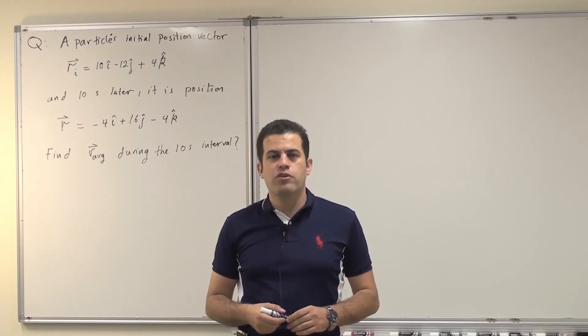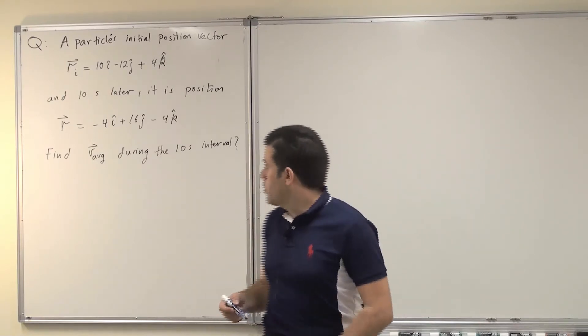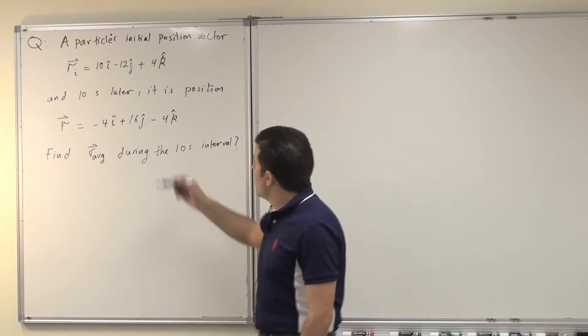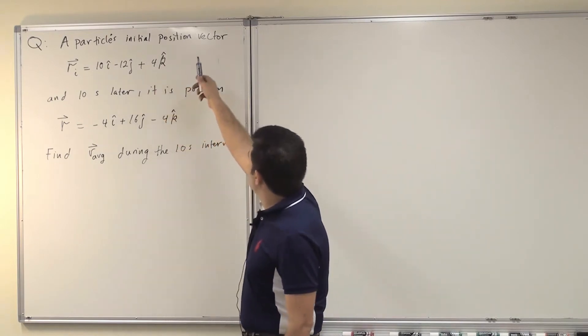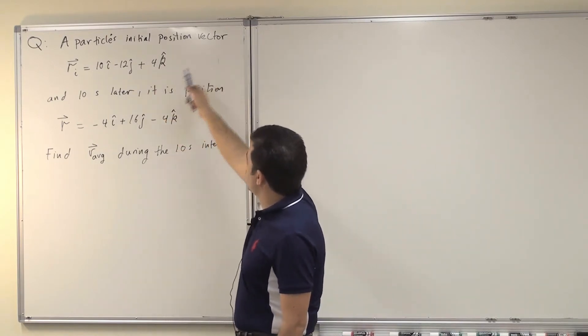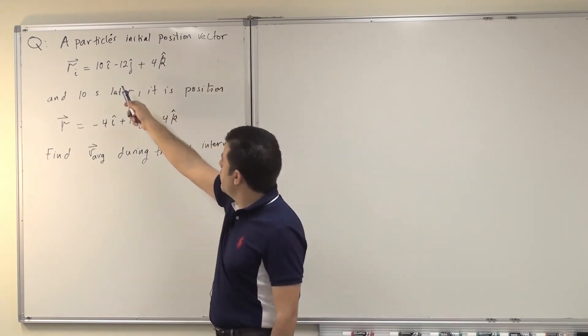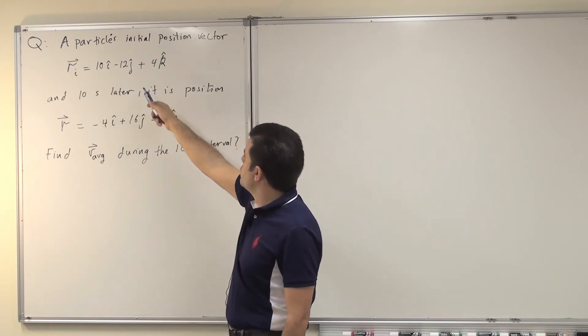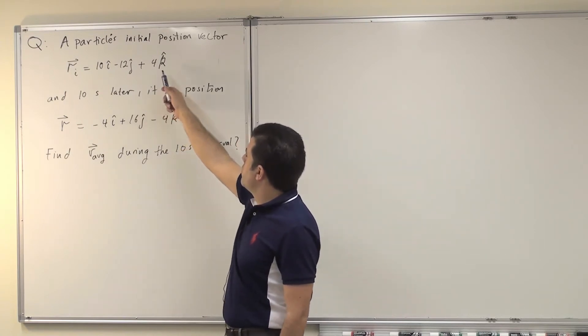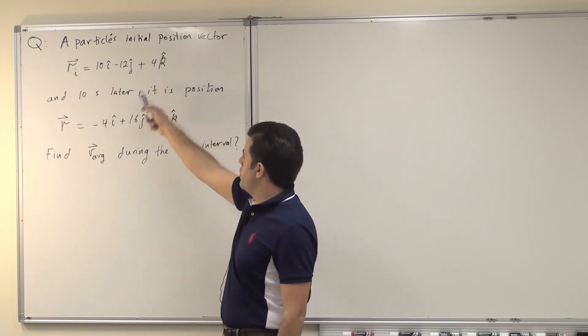As-salamu alaykum. Today we're solving questions from chapter 4. The question reads: a particle's initial position vector, ri, equals 10i-hat minus 12j-hat plus 4k-hat.